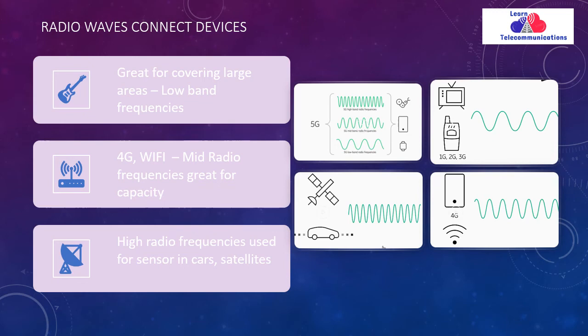The 5G mid band frequency ranges are used for Wi-Fi services and 4G services as well. The 5G higher band frequency is used for sensors, cars, and short-range cyclic communication. Overall, 5G covers a different range of frequencies compared to a 4G network.